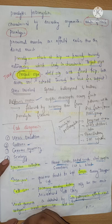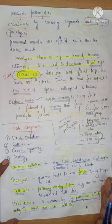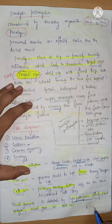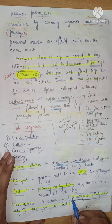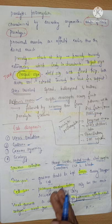Once the specimen reaches the lab, it should be cultured in a cell line. The most preferred cell line is primary monkey kidney cells. How do you know the virus has grown? By the cytopathogenic effect — ballooning of the cells. The monkey kidney cells in which you are harvesting the virus will bulge and appear like balloons, indicating the virus has grown.